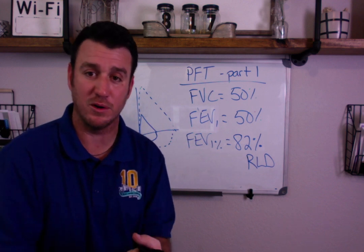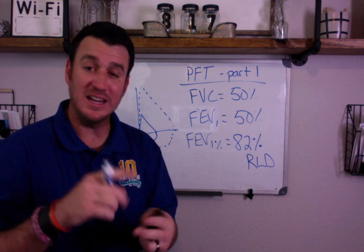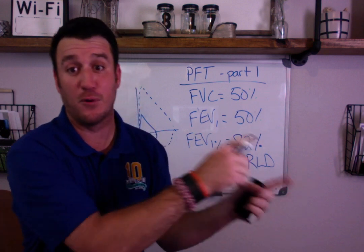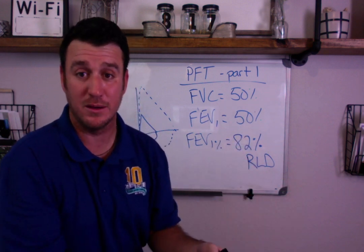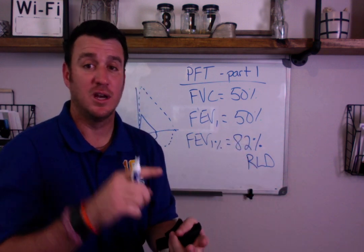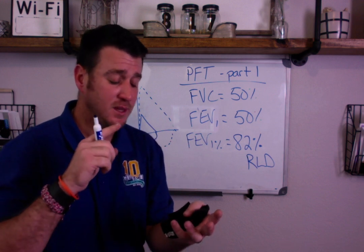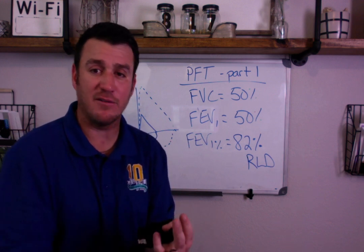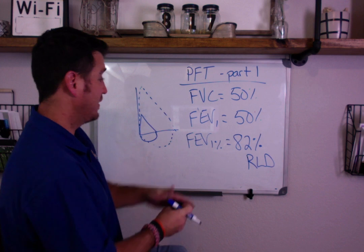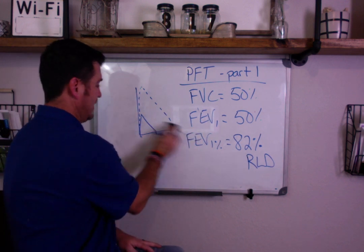This is a restrictive lung disease — you're thinking pulmonary fibrosis, pneumoconiosis, any alveolar defect, anything like that. Restrictive lung disease, this is what it looks like.